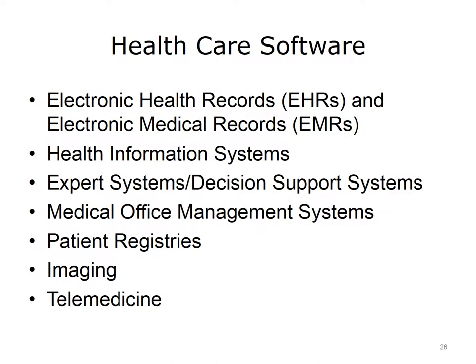There are many different software applications available for healthcare. They include electronic health records or EHRs and electronic medical records or EMRs, which both pertain to the medical and health information of an individual. Health information systems are typically used in hospitals or large clinics. They often include an EMR as well as other features such as physician ordering, medications, decision support, billing and scheduling. Expert systems and decision support systems use AI to analyze knowledge and make decisions as a human expert would. Medical office management systems also include management features such as scheduling and billing. Patient registries are datasets relating to a particular medical issue or population that are used to track changes in patients over time. They often provide a more global view over all patients than EMRs can. Imaging and telemedicine are technologies available in healthcare to improve care.